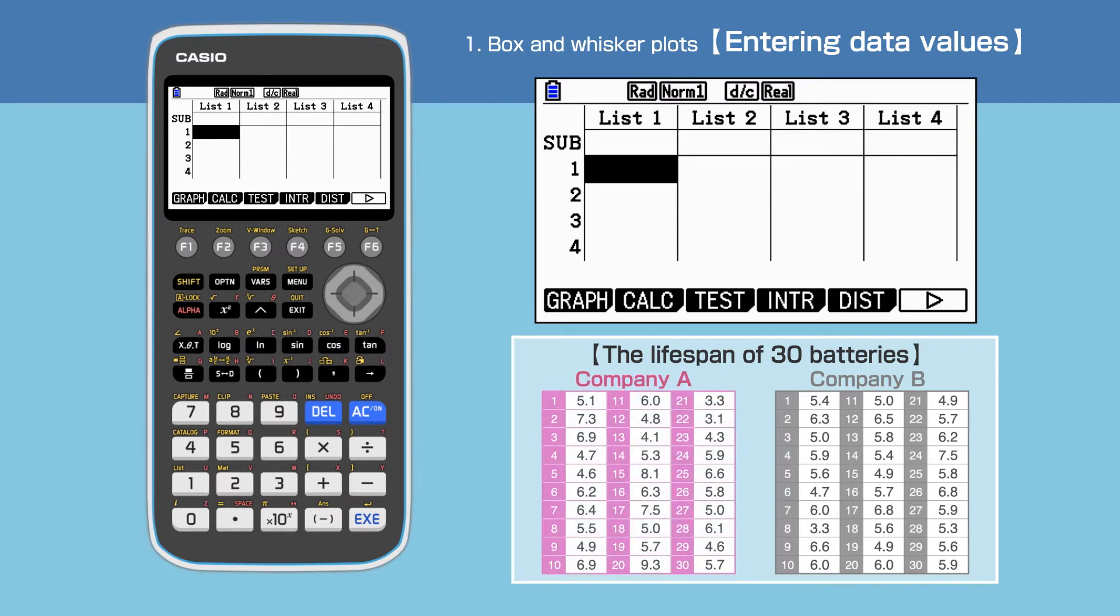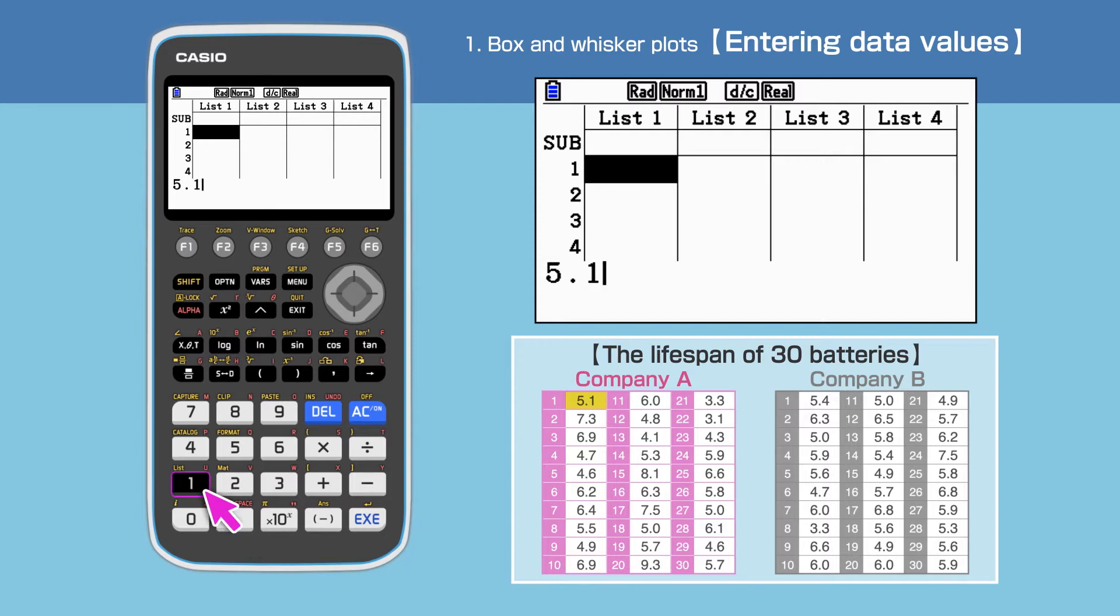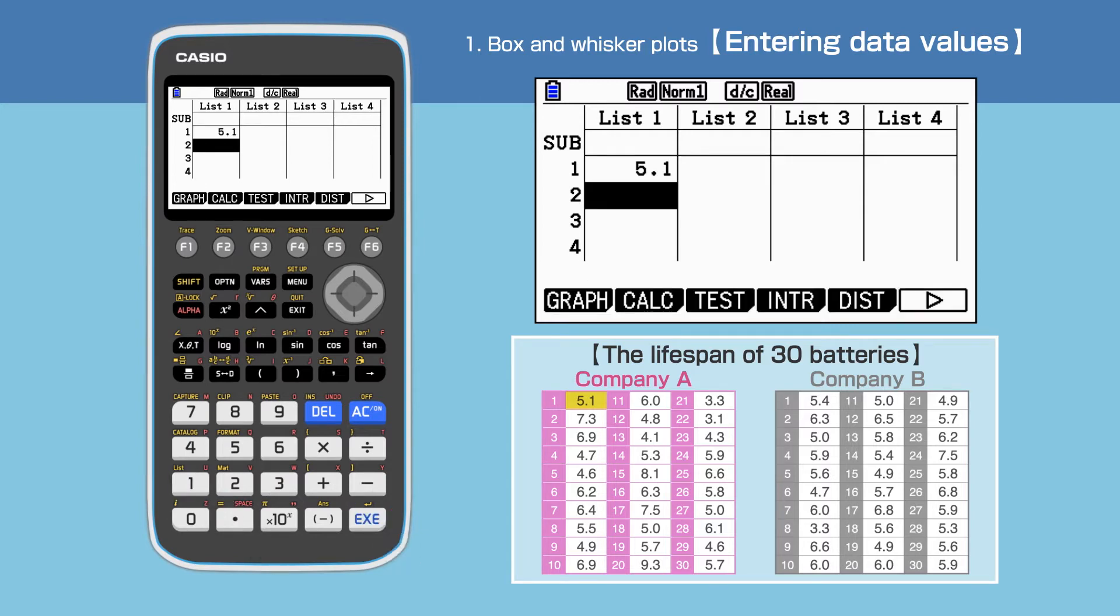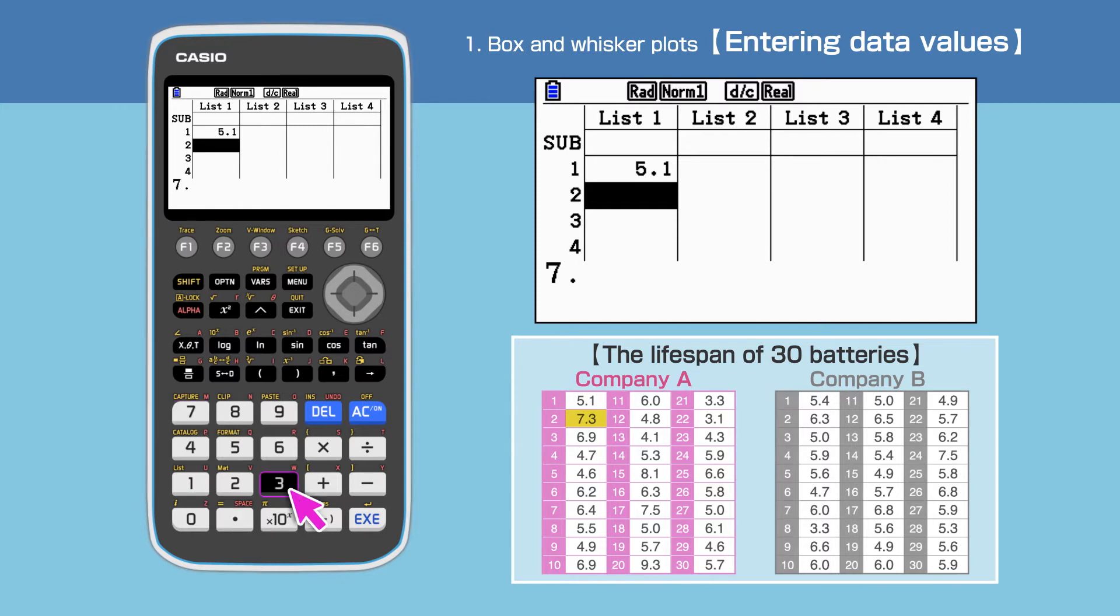Enter the 30 data values for company A in list 1. We need to enter the first data value and then press execute to proceed to the next line. Repeat this to input all 30 data values.